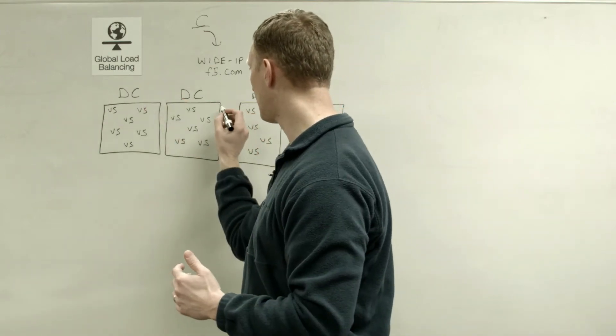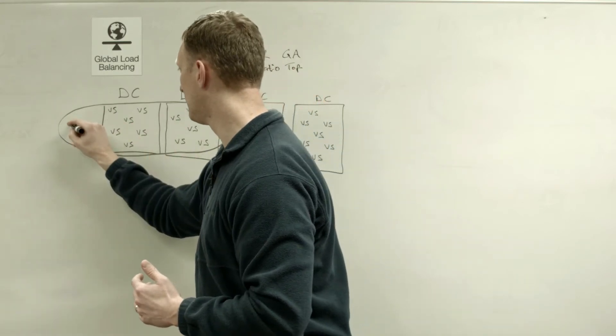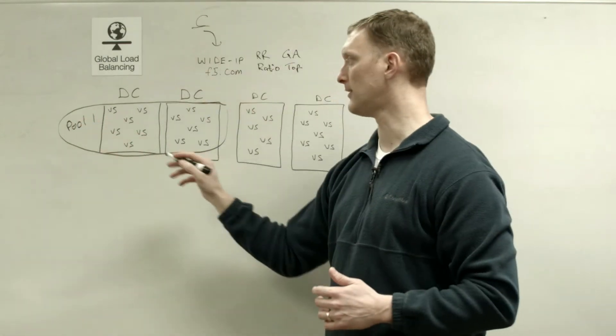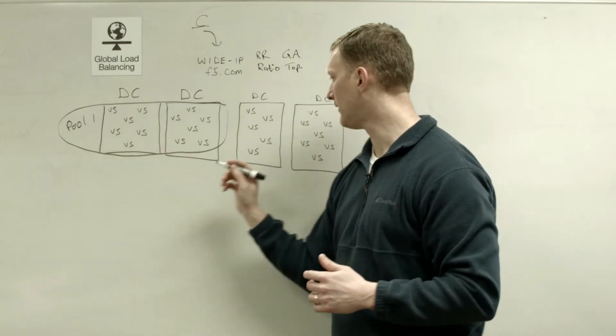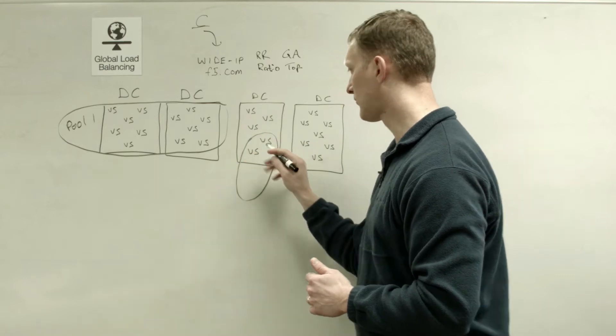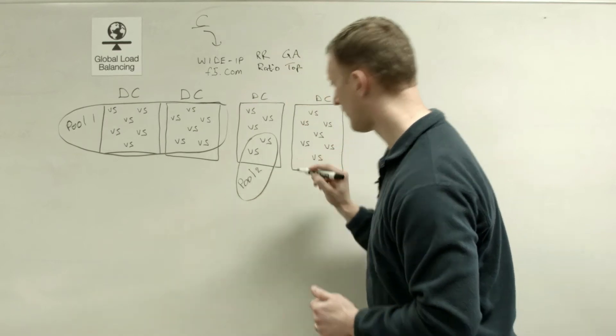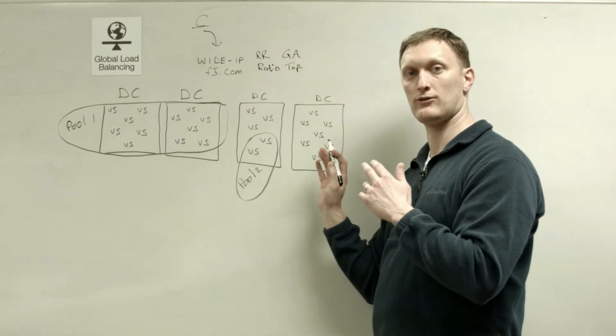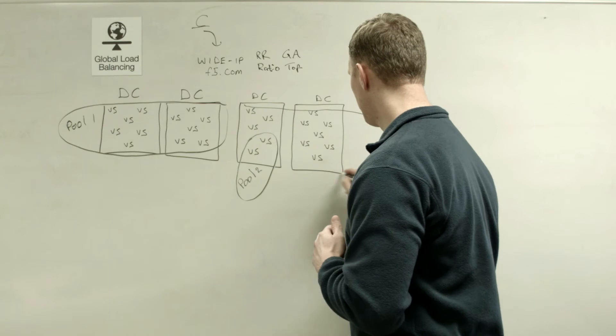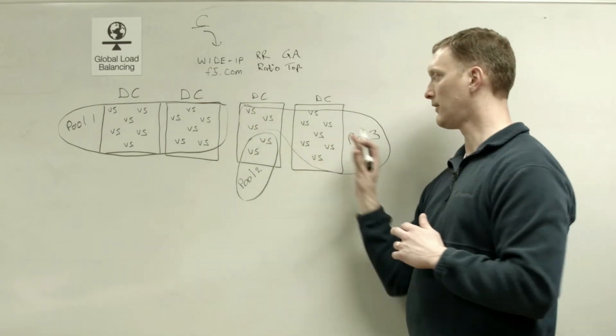So let's say that these two data centers, the entirety of these, all of this is, we'll call it pool number one. All right, pardon my penmanship. But all of this stuff is pool number one. Let's say that these, I'll draw a pool number two, and let's say that that includes just these virtual servers in this data center. So I'll put pool two right here. And then let's say all the rest of these virtual servers to include these in this data center and all these in this data center are pool number three. So pool number three includes all of those.